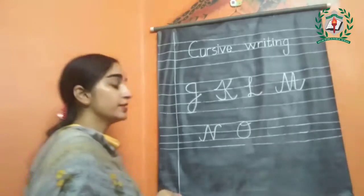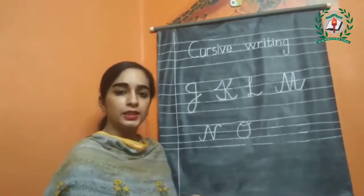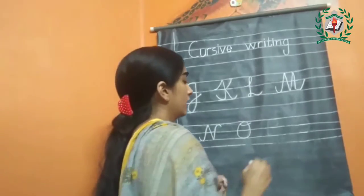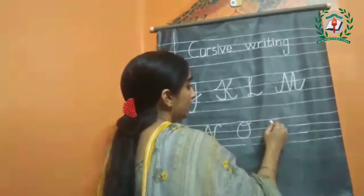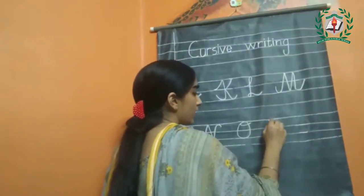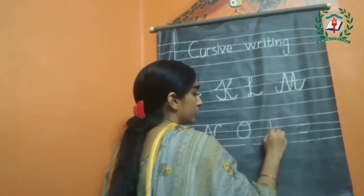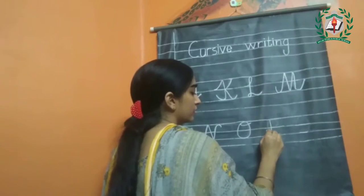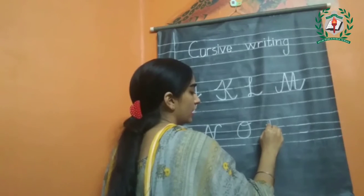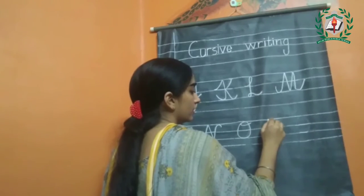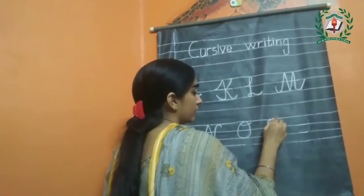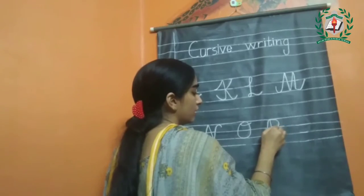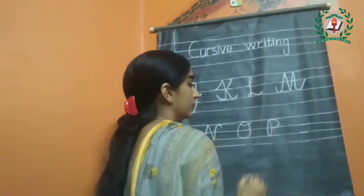Next letter is P. Start from the upper line, touching to the baseline. Make a loop, then a curve touching to the head line.